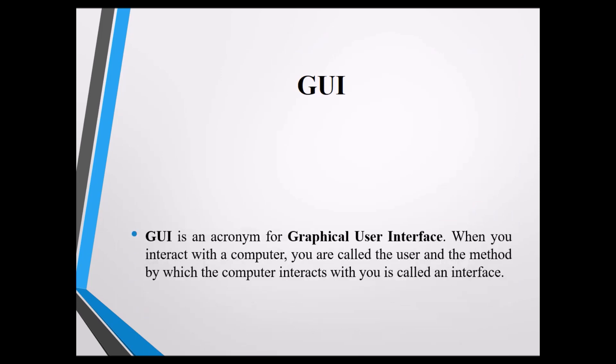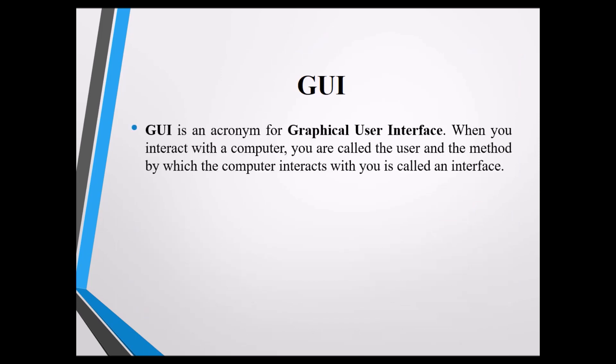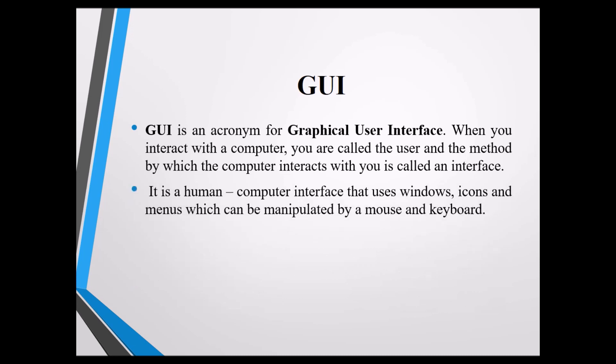Next is the GUI of AutoCAD. GUI stands for Graphical User Interface, where we can interact with the computer. You are called a user, and the method by which the computer interacts with you is called an interface. It is a human-computer interface that uses windows, icons, and menus which can be manipulated by mouse and keyboard.